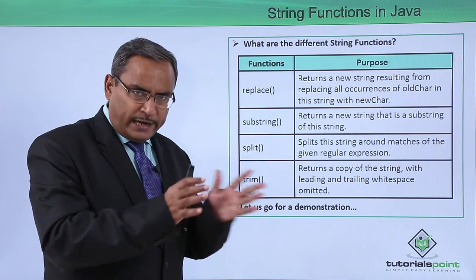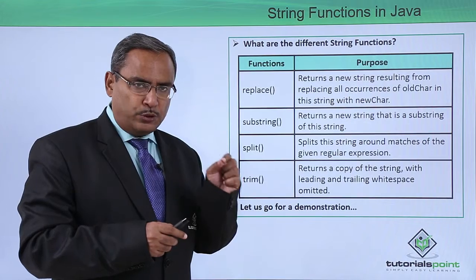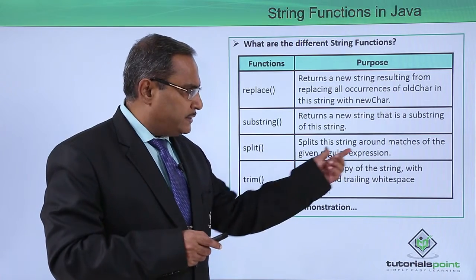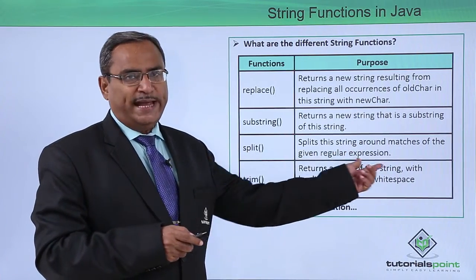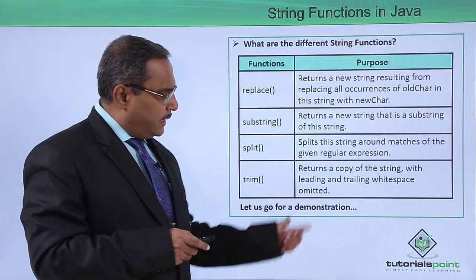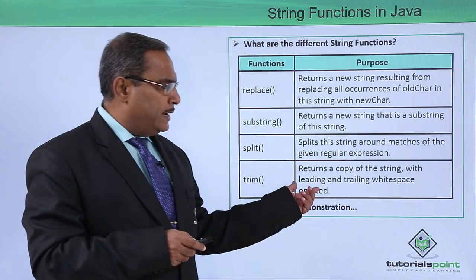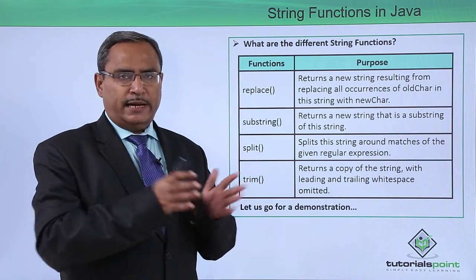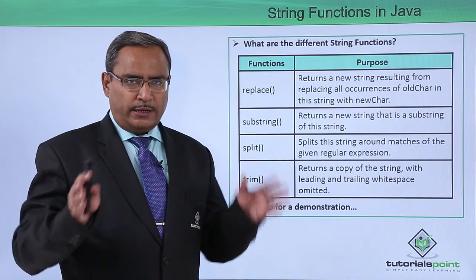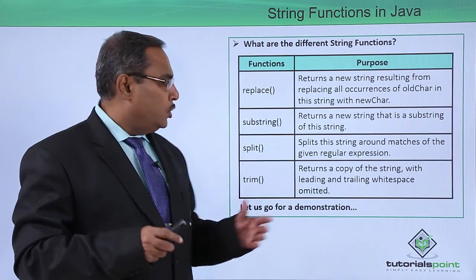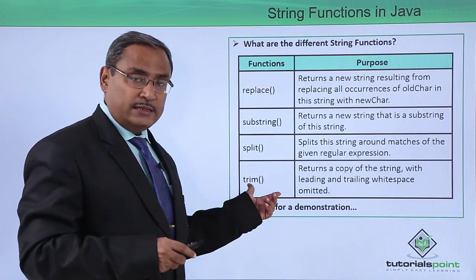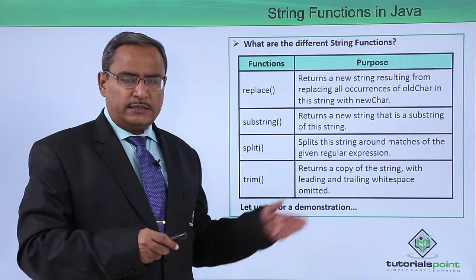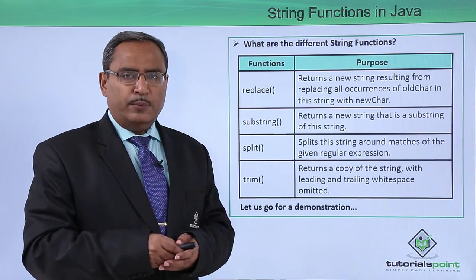split() divides the string depending upon the delimiter or separator character provided — it splits the string around matches of the given regular expression. trim() returns a copy of the string with the leading and trailing whitespace characters omitted, so all leading and trailing whitespace will be eliminated. Those are the most important and frequently used functions in Java programming. For better understanding, let us use them in our Java code in the following demonstration.